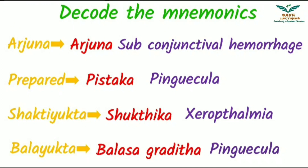Arjuna denotes the same — Arjuna — and its modern correlation is subconjunctival hemorrhage. In the word 'prepared', the first letter P denotes Pistaka and its modern correlation is Pingyakula. Shakti Yukta is denoted as Shuktika and its modern correlation is Xerophthalmia. Bala Yukta is denoted as Balasa Gratita and its modern correlation is Pingyakula.